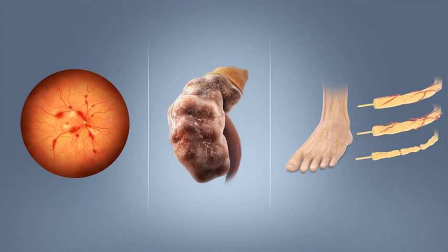Many drugs impair insulin secretion and some toxins damage pancreatic beta cells, whereas others increase insulin resistance, especially glucocorticoids, which can provoke steroid diabetes. The ICD-10 (1992) diagnostic entity, malnutrition-related diabetes mellitus (MRDM or MMDM), ICD-10 code E-12, was deprecated by the World Health Organization when the current taxonomy was introduced in 1999. Type 3 diabetes is a name used by some researchers for Alzheimer's disease, as there is evidence that insulin resistance in the brain plays a role in the latter. It is not formally recognized as a form of diabetes.